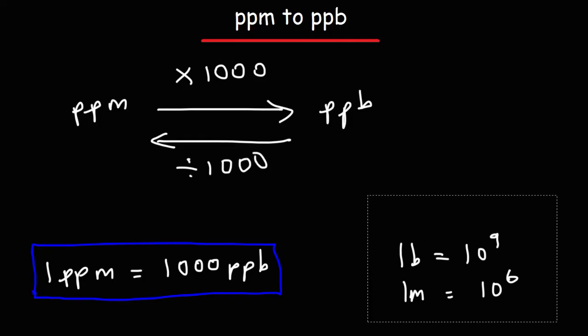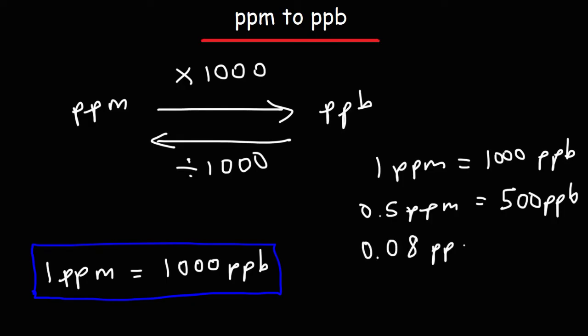So just to give you some values, we said that 1 parts per million is 1,000 parts per billion. 0.5 parts per million is 500 parts per billion. 0.08 parts per million is 80 parts per billion. So notice that the number in front of parts per billion is always bigger than a number in front of parts per million. It's always 1,000 times more.